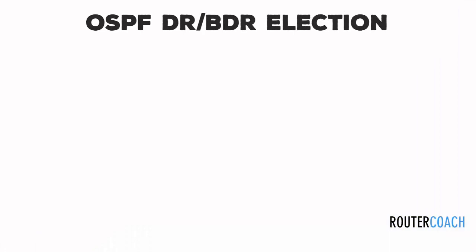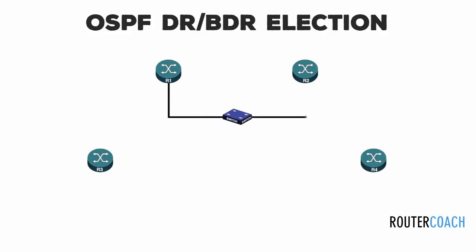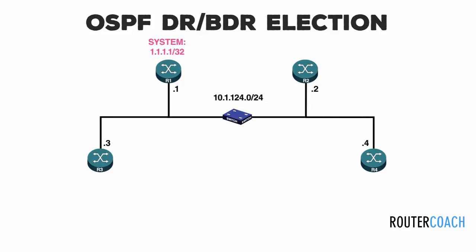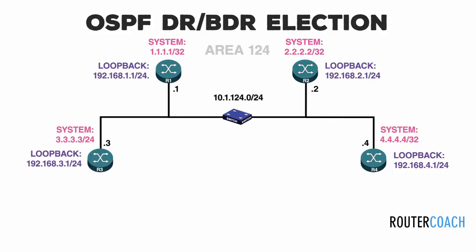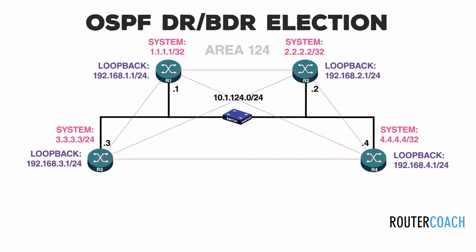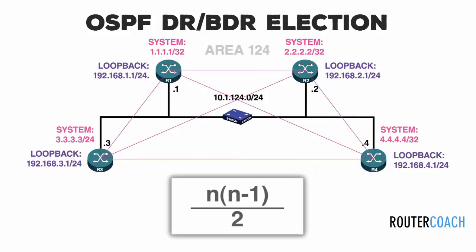Consider the following topology. We have R1, R2, R3 and R4 all connected by a switch on a multicast access network. In Alcatel-Lucent terminology there are only two network types: broadcast networks and point-to-point networks, and the OSPF DR/BDR election is only formed on the broadcast network type. Now if all OSPF routers were to form adjacencies with every other router on a broadcast network, the formula is N times (N minus 1) divided by 2 links, with LSAs being sent across each of those links.